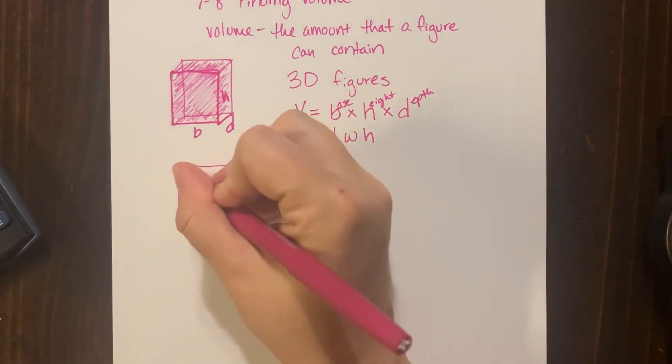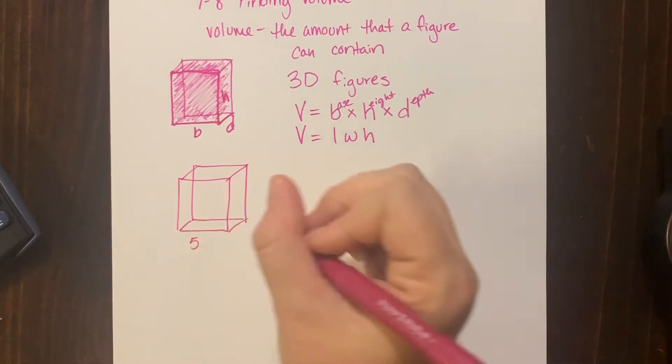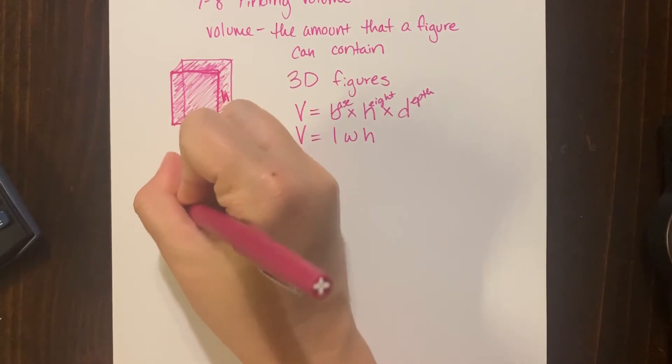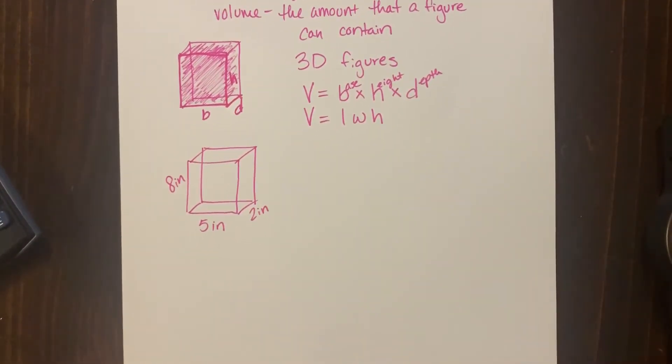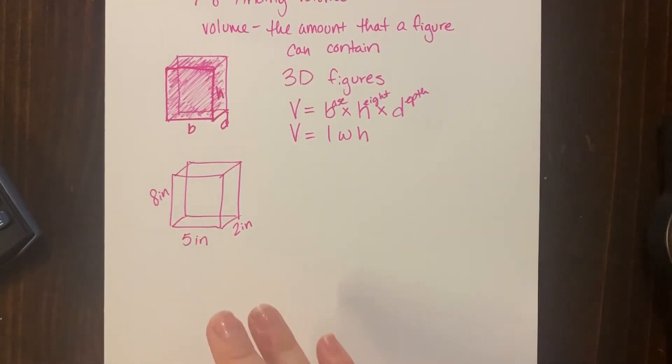Two rectangles and then connect them. Let's say this cereal box is five inches. It's kind of a small cereal box. We'll do eight inches here and we'll do only two inches deep.